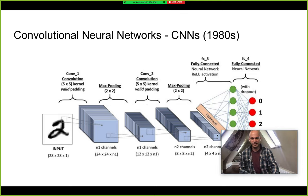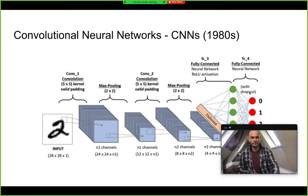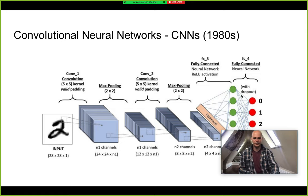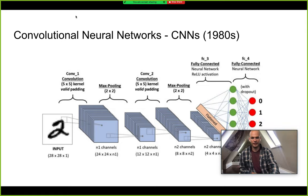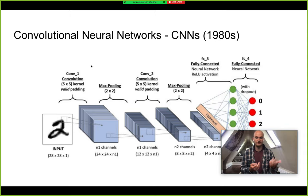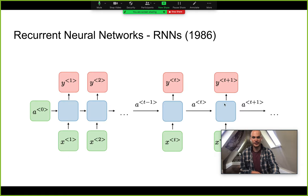Once you get to the final output channel of the CNN, those are passed through to some sort of output layer, like classification, with a softmax at the end. That concept was introduced as far back as the 1980s. Of course, we've started to see more impact of CNNs just recently in the last 10 years or so, but this concept has been around for many years.